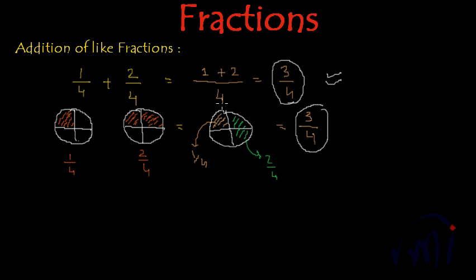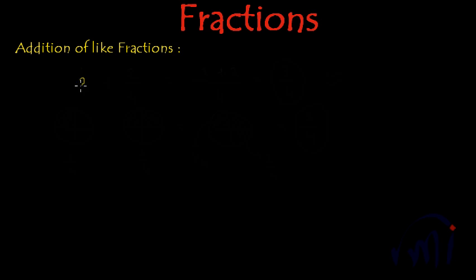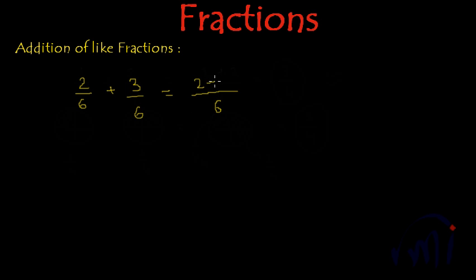I am going to take one more example. Suppose we have to add 2 by 6 and 3 by 6. What you have to do: write the denominator as it is and just add the numerators, so 2 plus 3 — this should be equal to 5 by 6. So the summation of 2 by 6 and 3 by 6 should be equal to 5 by 6.